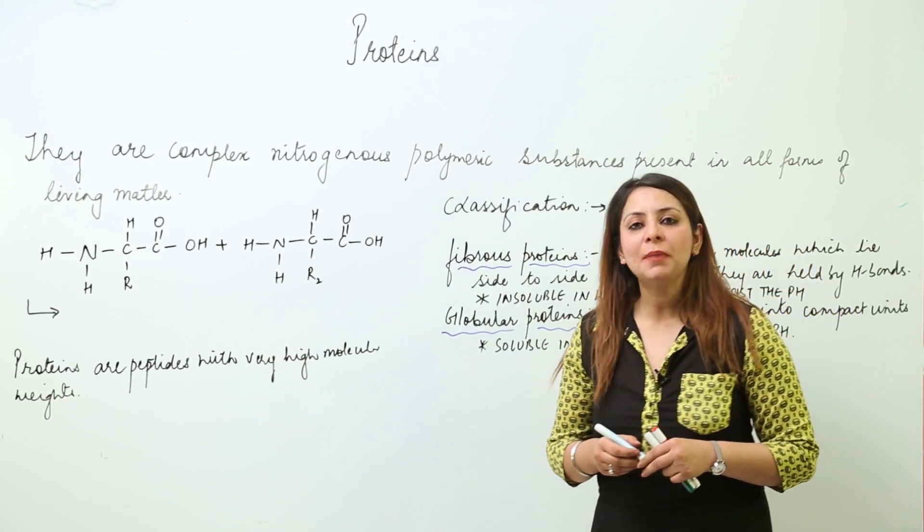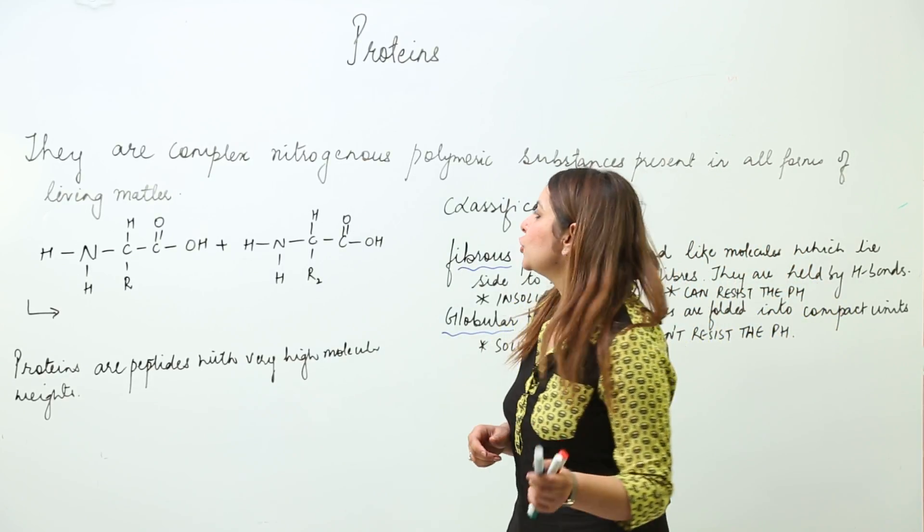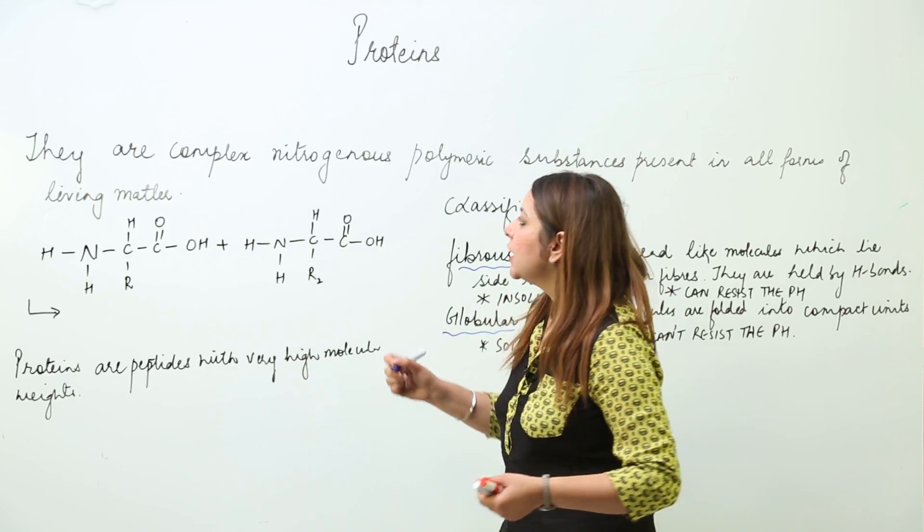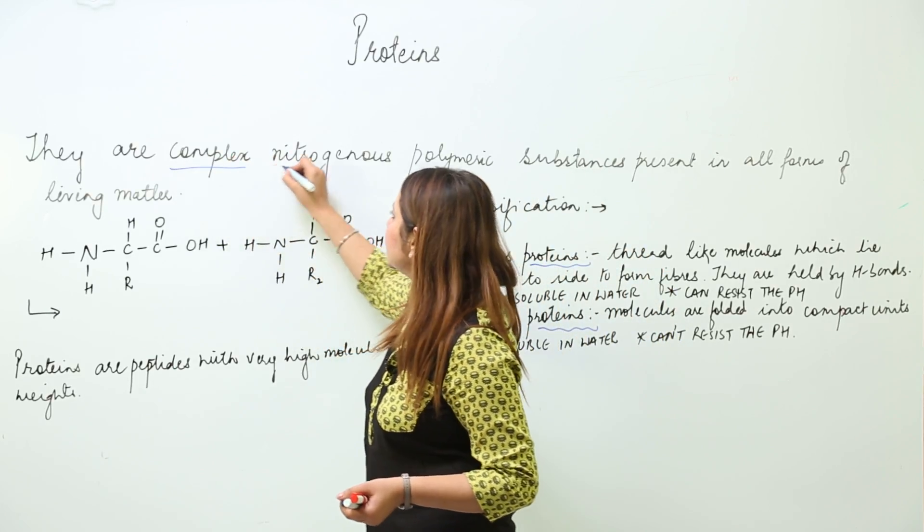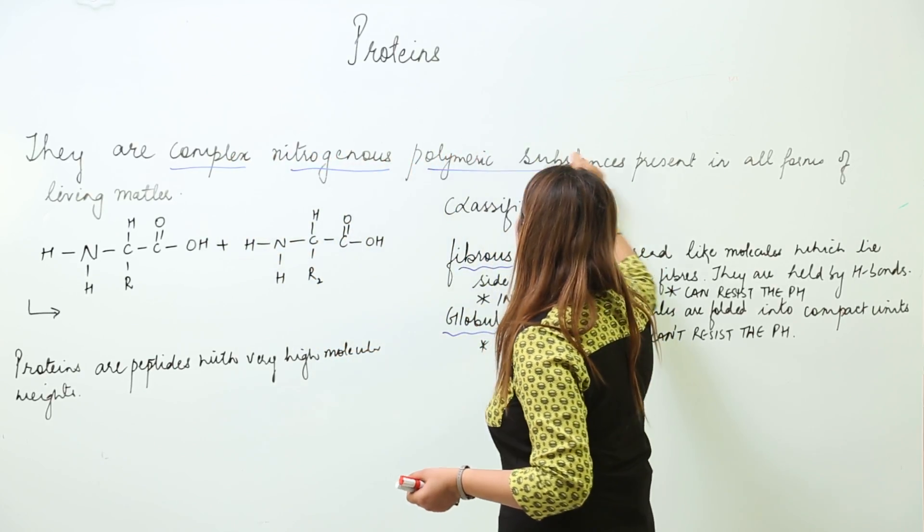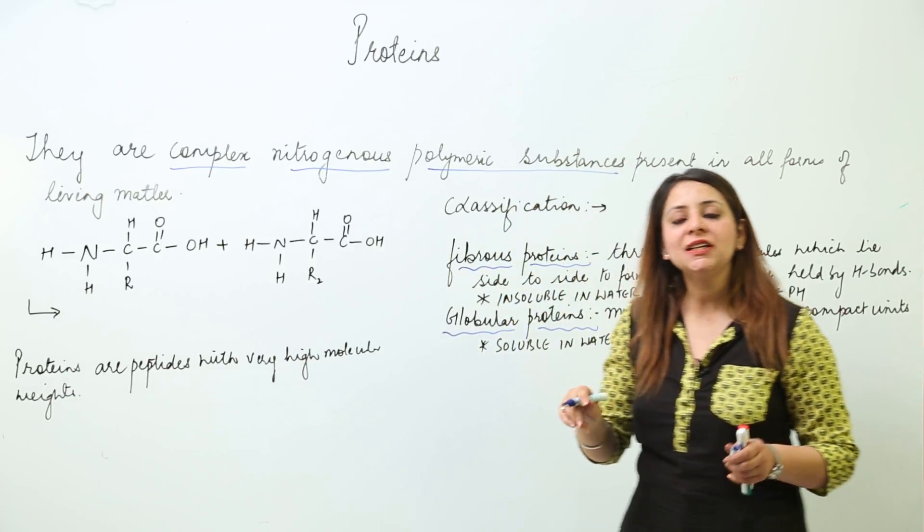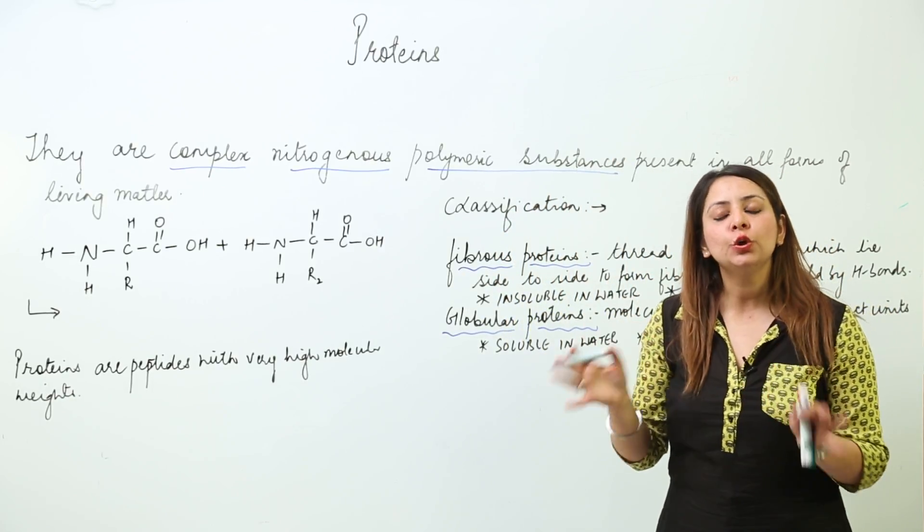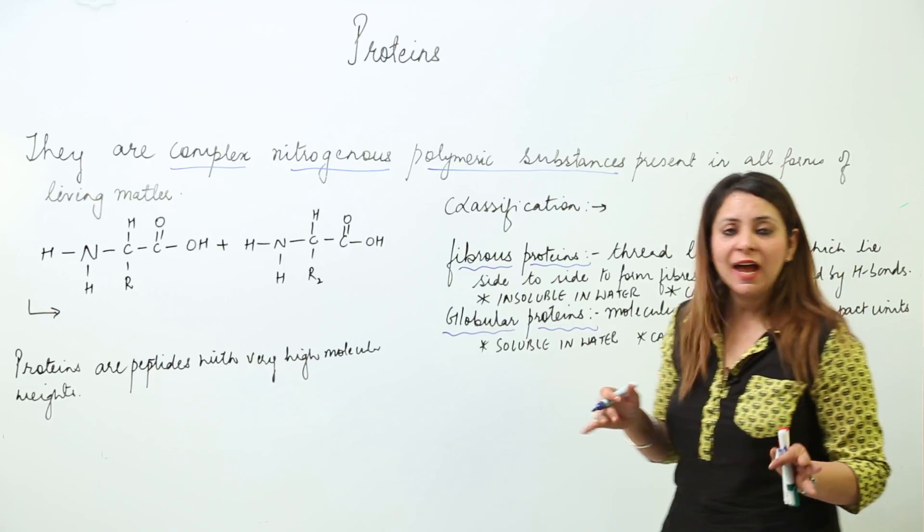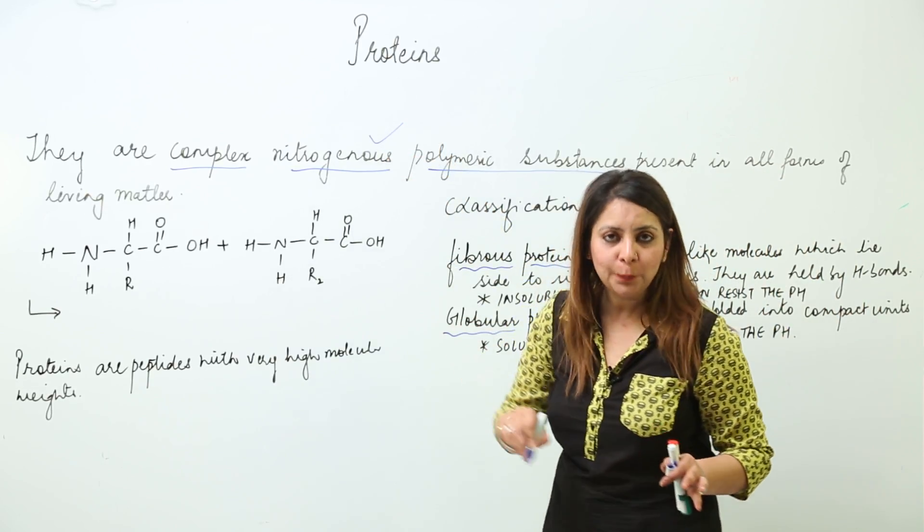Now we are going to discuss proteins. So what are proteins actually? They are complex nitrogenous polymeric substances. That means they are a polymer - a huge molecule that contains a nitrogenous group in them.